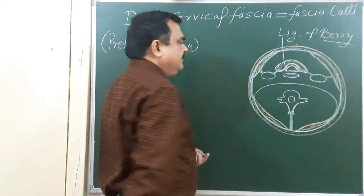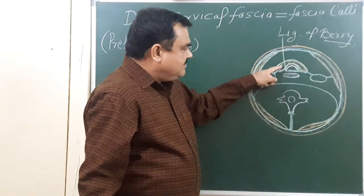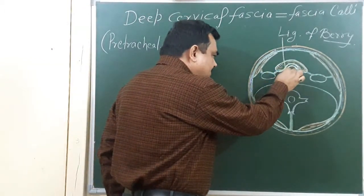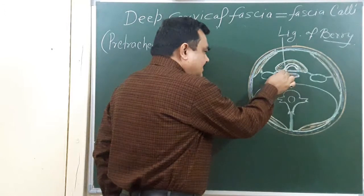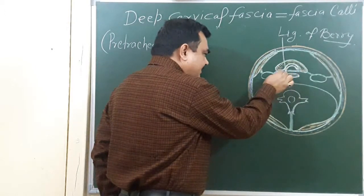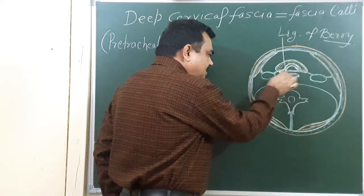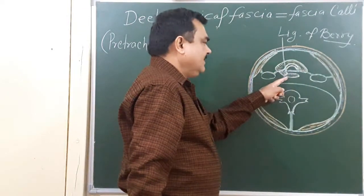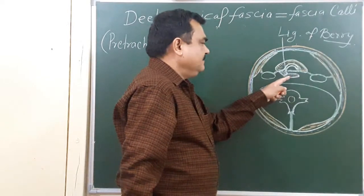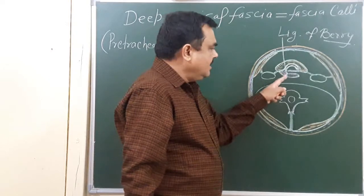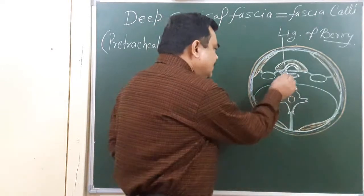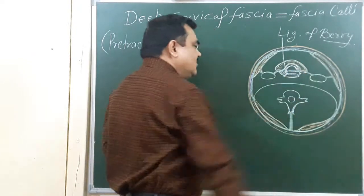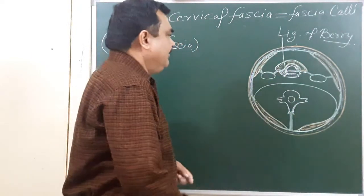This is the region why, in case of enlargement of the thyroid gland, the thyroid gland may bulge towards this side. Because this part is covered by fascia which is very thin, due to bulging and compression of the esophagus, it produces difficulty in swallowing. Also it compresses the recurrent laryngeal nerve here, which causes hoarseness of the voice.